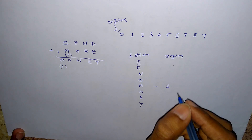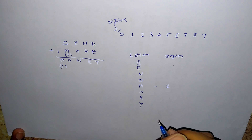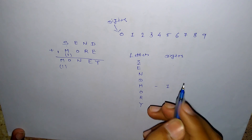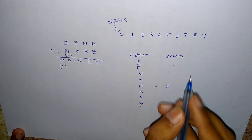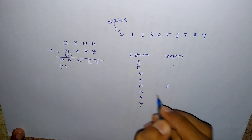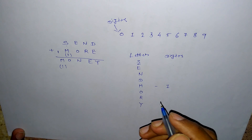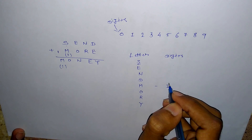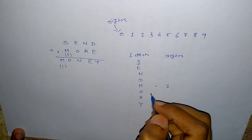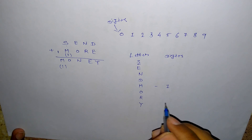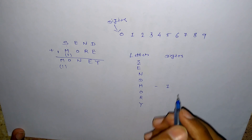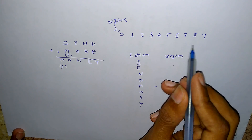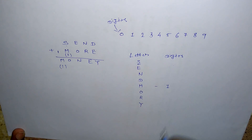One thing to remember: when we assign a digit — like I assign digit 1 to M — I do not assign this 1 to any other letter. So we are assigning unique digits to unique letters.